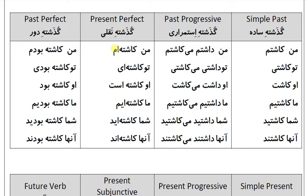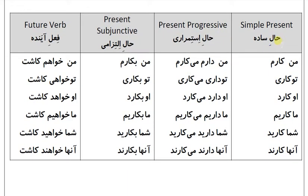Present perfect: من کاشته‌ام، تو کاشته‌ای، او کاشته است، ما کاشته‌ایم، شما کاشته‌اید، آنها کاشته‌اند. Past perfect: من کاشته بودم، تو کاشته بودی، او کاشته بود، ما کاشته بودیم، شما کاشته بودید، آنها کاشته بودند.